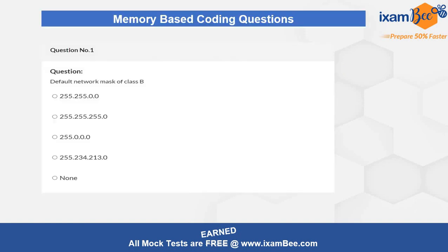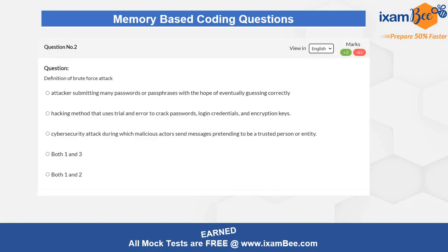Memory-based question number one is related to the default mask of Class B. This question is very easy — the options are straightforward and it is a factual, static question, so you do not need any kind of logical thinking. Question two is related to brute force attacks. This is again a static question, but you have to read the answers logically in order to understand the correct solution.